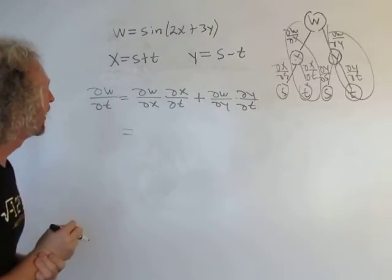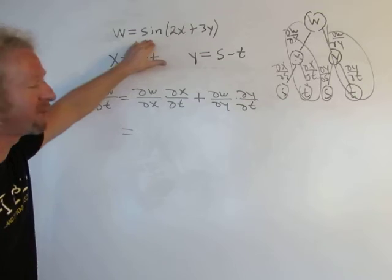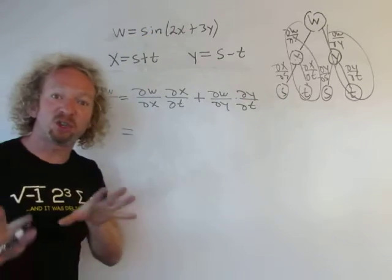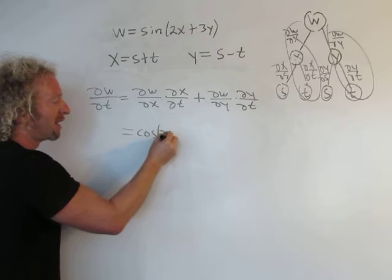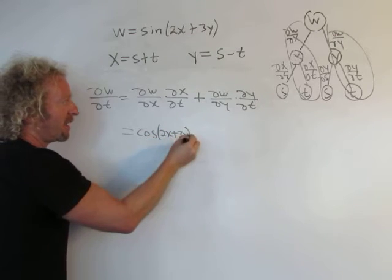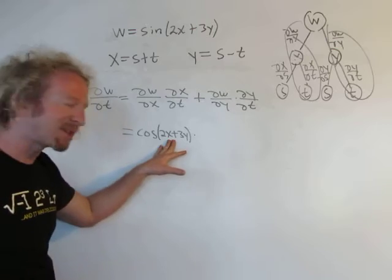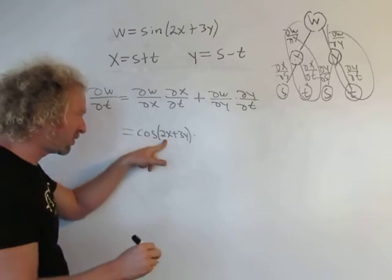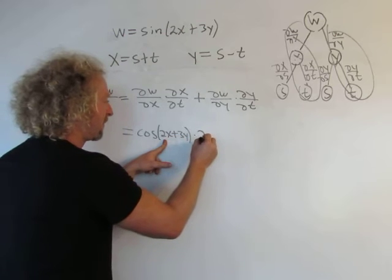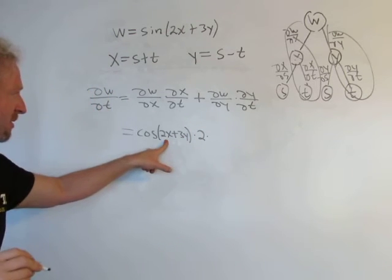So del w, del x. Let's see. We've got to take a derivative now. The derivative of a sine is cosine. This is going to be cosine of 2x plus 3y. We're using the chain rule. Times the derivative of the inside with respect to x. So the derivative of 3y is 0. So this derivative here is simply 2. All right. That's it. Just 2.